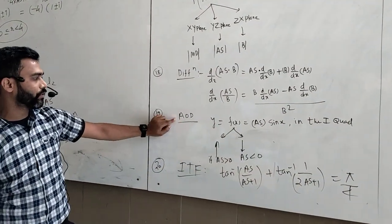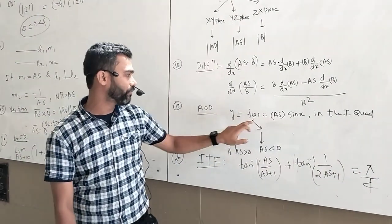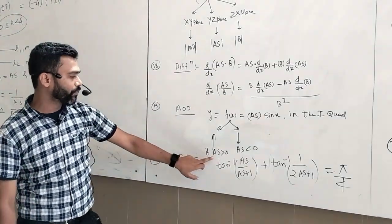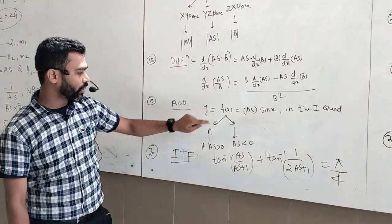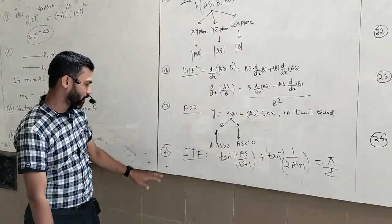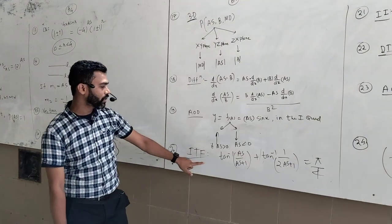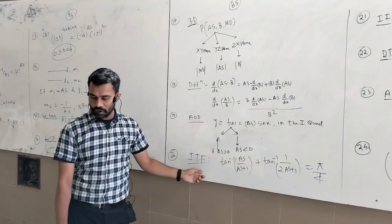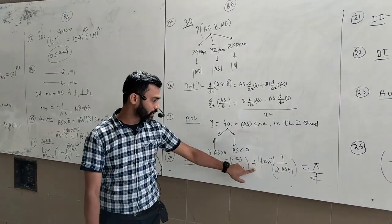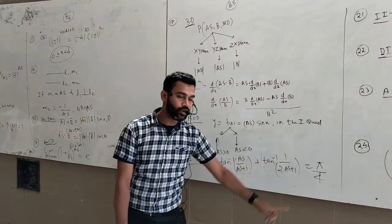Application of derivatives: if y = f(x) = Anisar·sin x in the first quadrant — if Anisar is positive the function is increasing; if Anisar is negative, the function is decreasing. Inverse trigonometric functions (ITF) shortcut: tan⁻¹(Anisar/(Anisar+1)) + tan⁻¹(2×1/(2·Anisar+1)) = π/4.